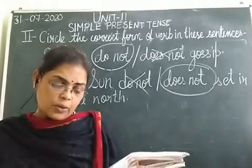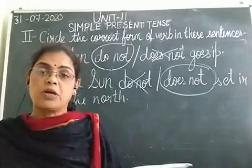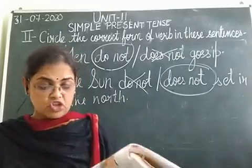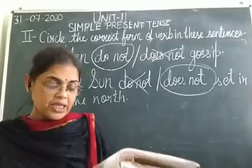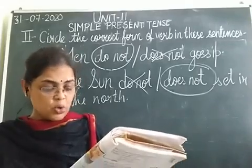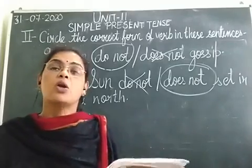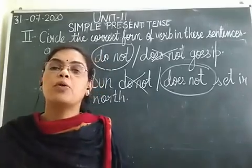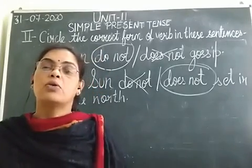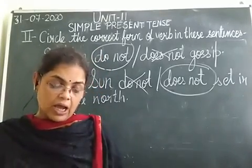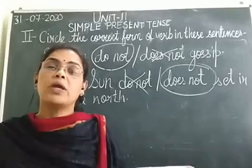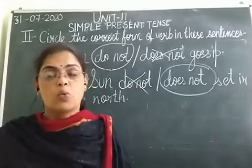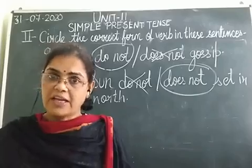With plural subject nouns and pronouns like boys, children, I, we, you, they — we use the root form of the verb. These pronouns are plural, and with them we use the root form of the verb.